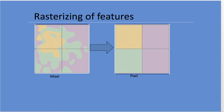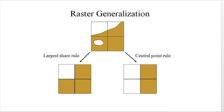When generalizing, you can get different results depending on which rules you use. Do you use the majority — the largest share of the pixel becomes the classification — or do you use a central point, sampling the middle of each pixel? For example, in one pixel, central point finds a small white area and classifies it white, but if you use largest share, most of that pixel is gold, giving a different result. Raster generalization is always happening.